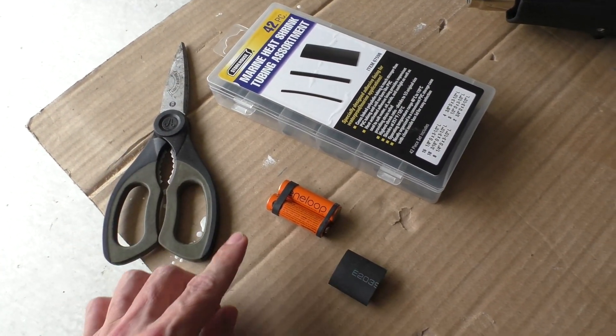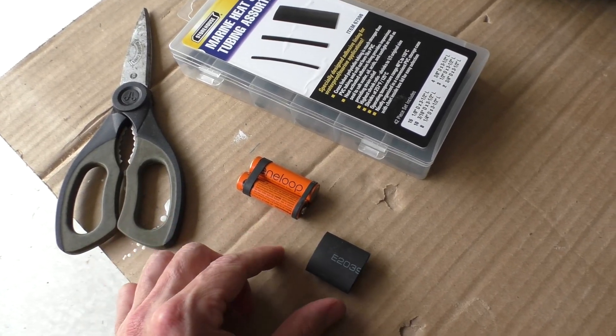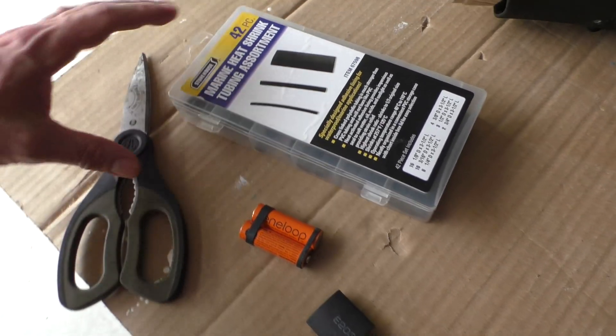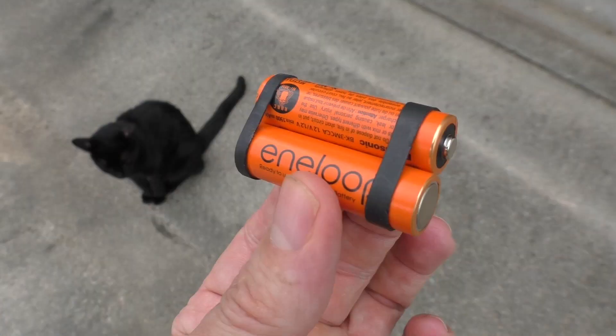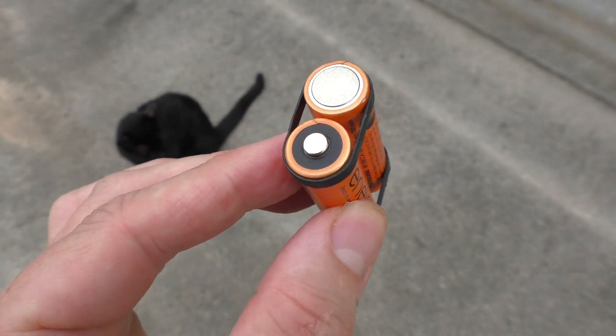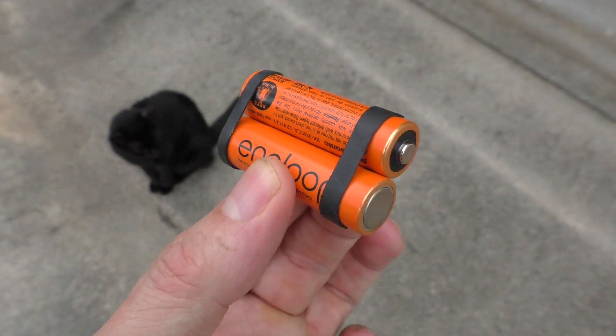I cut two little strips of this heat shrink tubing and wrapped them around the battery pack and it'll hold it together.